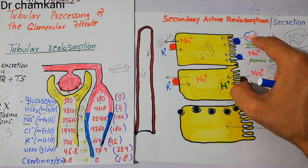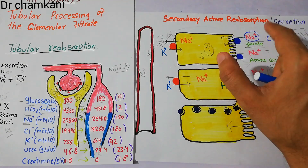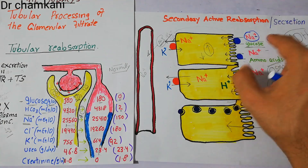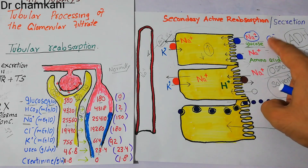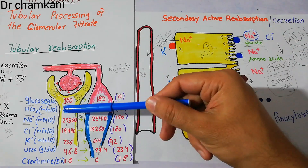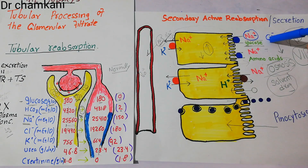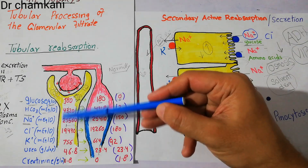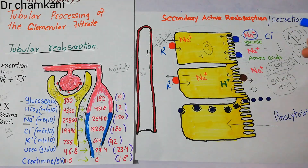Initially, due to the movement of the positive charge associated with sodium, an electrical gradient developed. Now, due to the movement of water, the concentration of chloride in the tubule increases. So a concentration gradient also develops, and this concentration gradient also favors reabsorption of chloride from the tubule into the peritubular capillaries or the intercellular spaces.